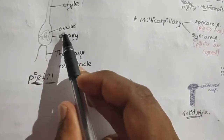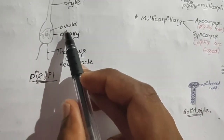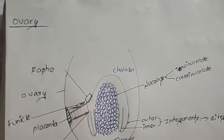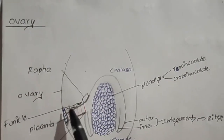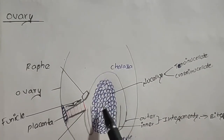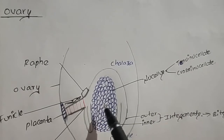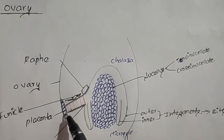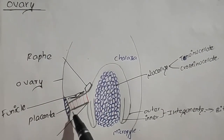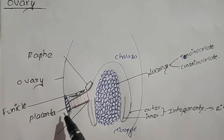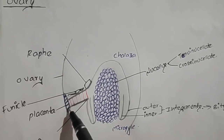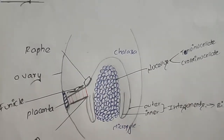Inside the ovary, the ovule is present, and inside the ovule the embryo sac is present, which contains the egg. The ovule is attached to a tissue in the ovary known as the placenta, and the arrangement of this placenta is known as placentation.